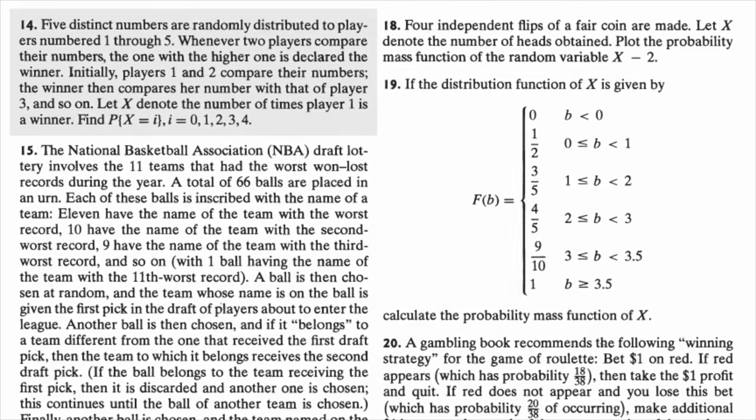Hi everyone, welcome back to my YouTube videos. In this video, I'm going to solve exercise 4.14 of the textbook, First Course in Probability. In this problem, we assume that five distinct numbers are randomly distributed among five players, and they play a game with player one playing against player two. Whoever has the largest number is going to play with player three.